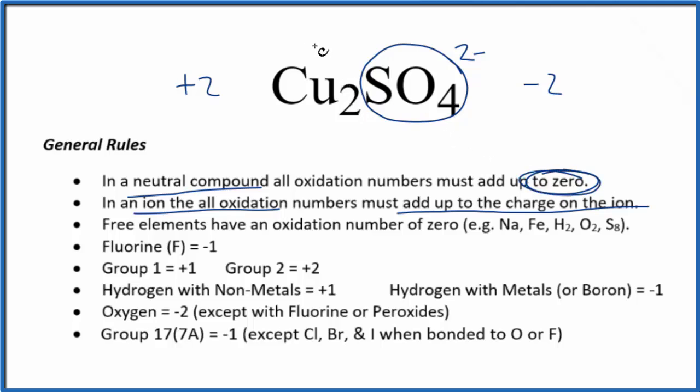If we had 2 times some number, that would give us plus 2. Two times plus 1 gives us plus 2. Plus 2 and minus 2 add up to zero.